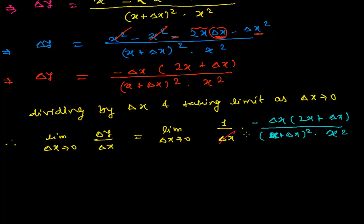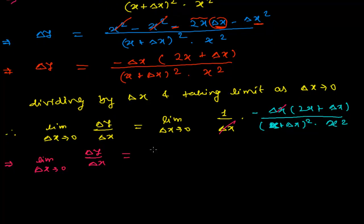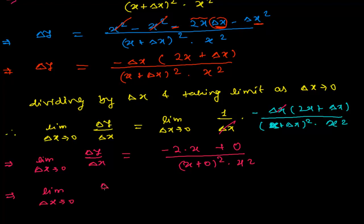Now I am left with limit as delta x tends to 0 of delta y over delta x equal to limit as delta x tends to 0 of minus (2x plus delta x) over (x plus delta x) squared times x squared. Inserting delta x equals 0: this becomes minus 2x over x squared times x squared, which is minus 2x over x to the fourth. The x cancels, leaving minus 2 over x cubed.